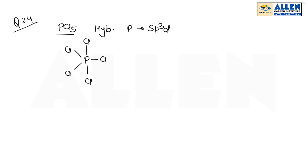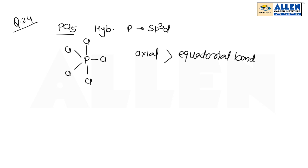In the trigonal bipyramidal structure, axial bonds are slightly larger than equatorial bonds. That's why the bond length of axial bonds is greater than equatorial bonds.